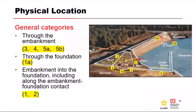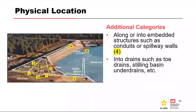The general categories of where internal erosion can occur: it can generally occur through the embankment, through the foundation of a dam, and from the embankment into the foundation — including along the contact between the embankment and its foundation. Internal erosion can also occur along or into structures like conduits or spillway walls, and into drainage features like toe drains.